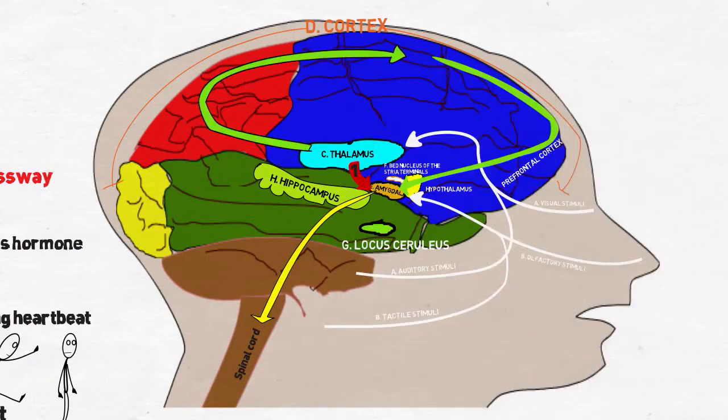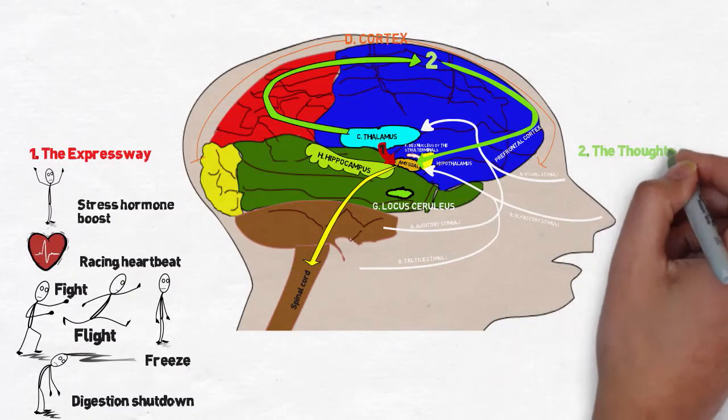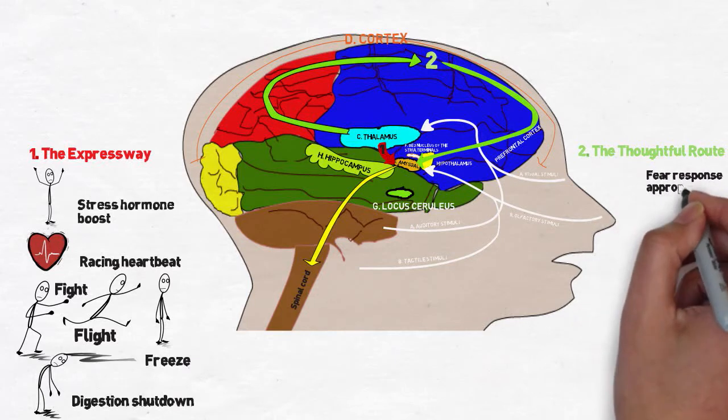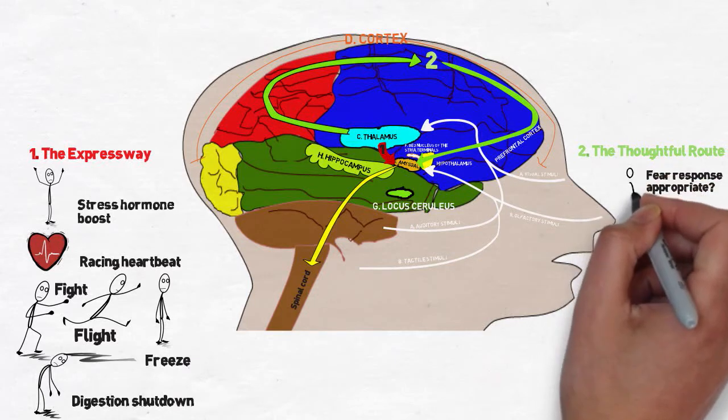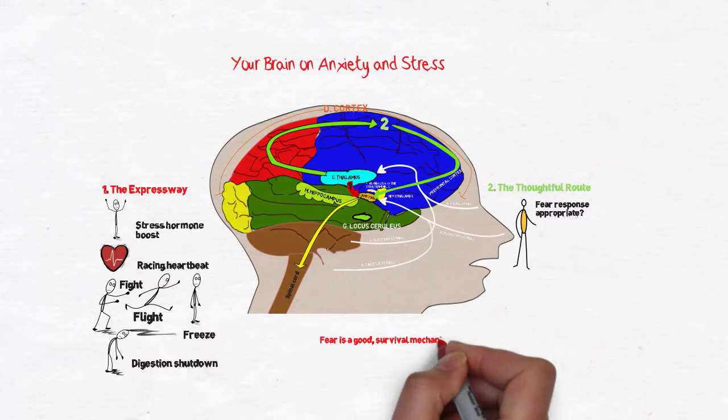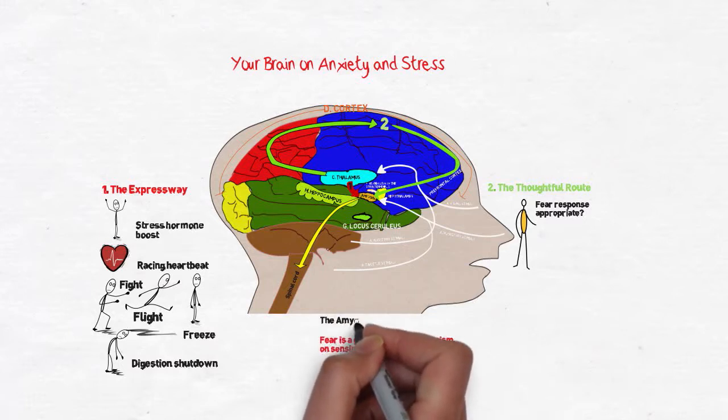Only after the fear response has been activated does the conscious mind kick in. Some sensory information takes a more thoughtful route from the thalamus to the cortex. The cortex decides whether the sensory information warrants a fear response. If the fear is a genuine threat in space and time, the cortex signals the amygdala to continue being on alert.